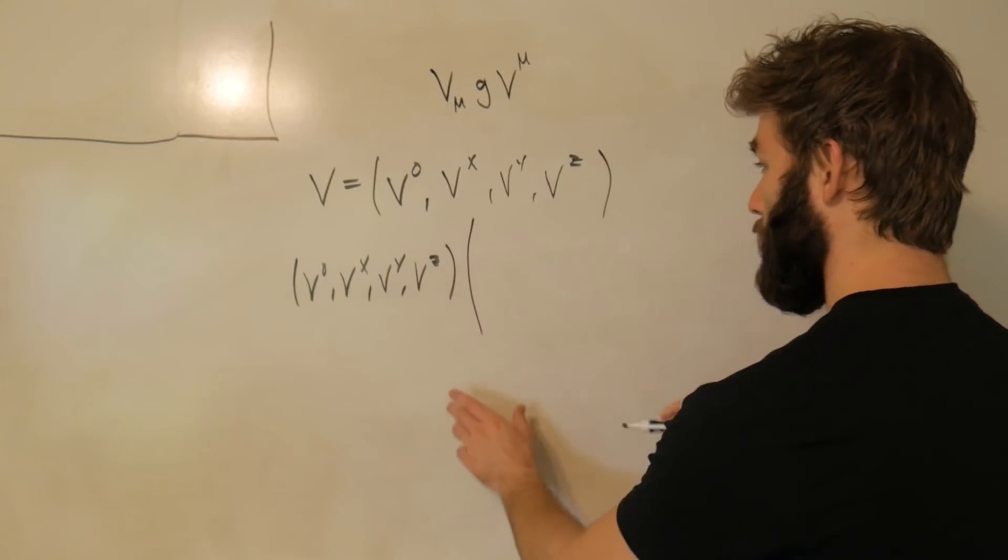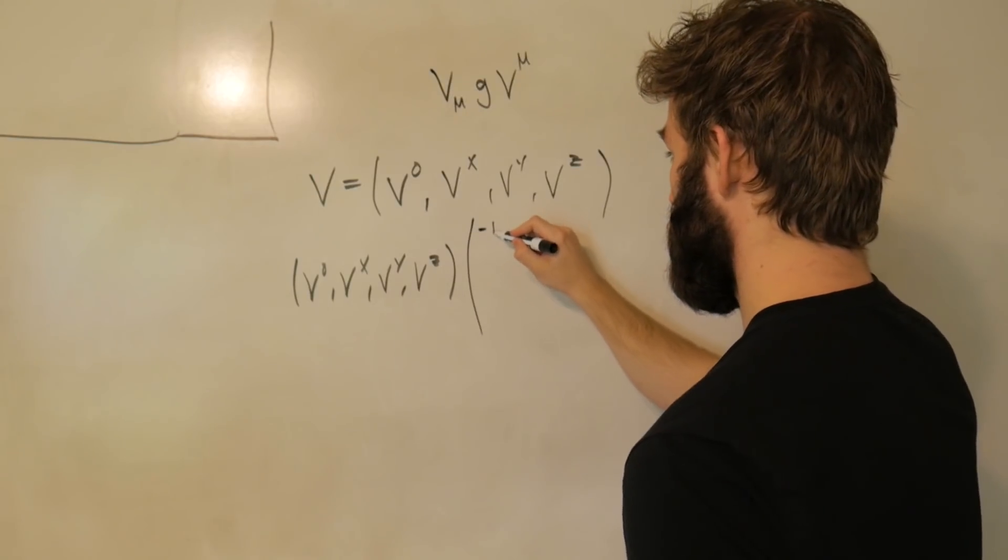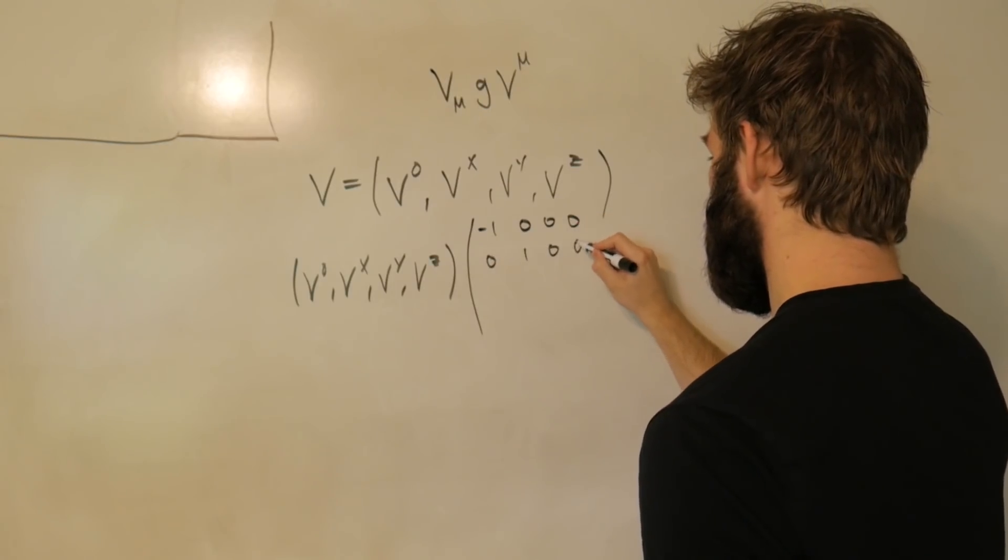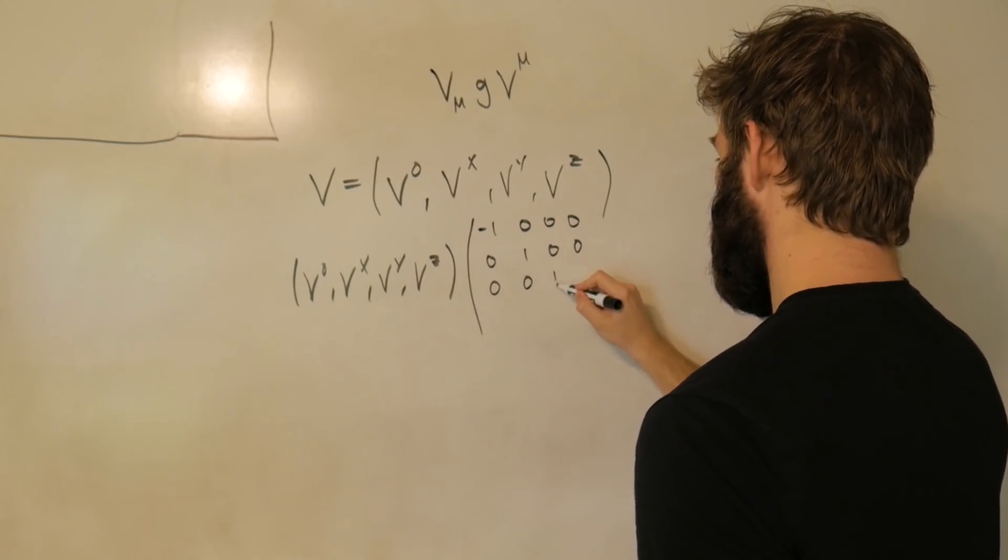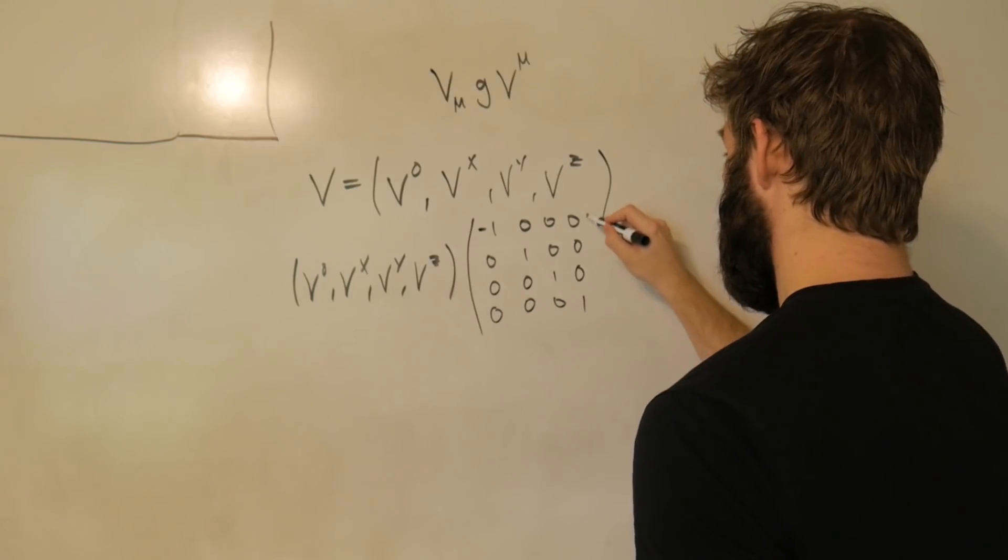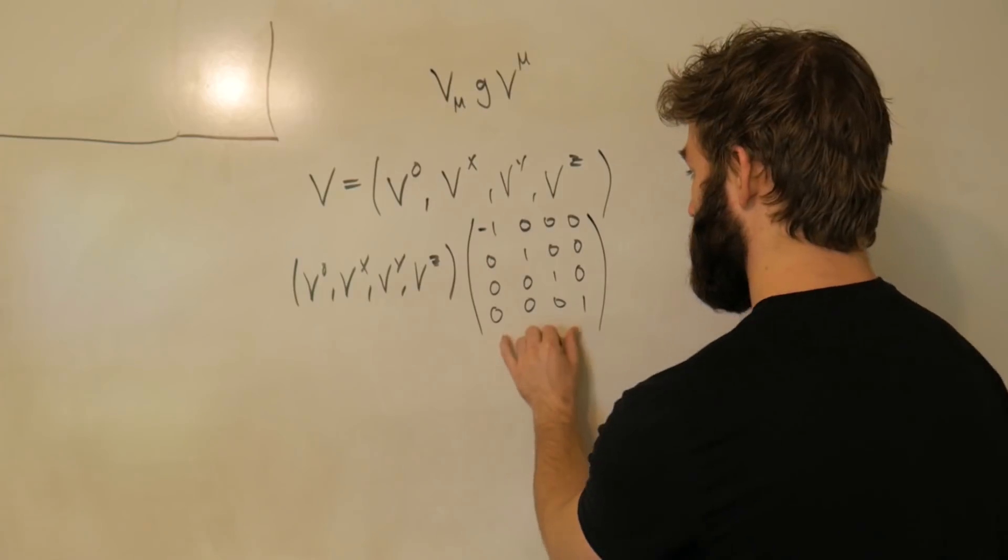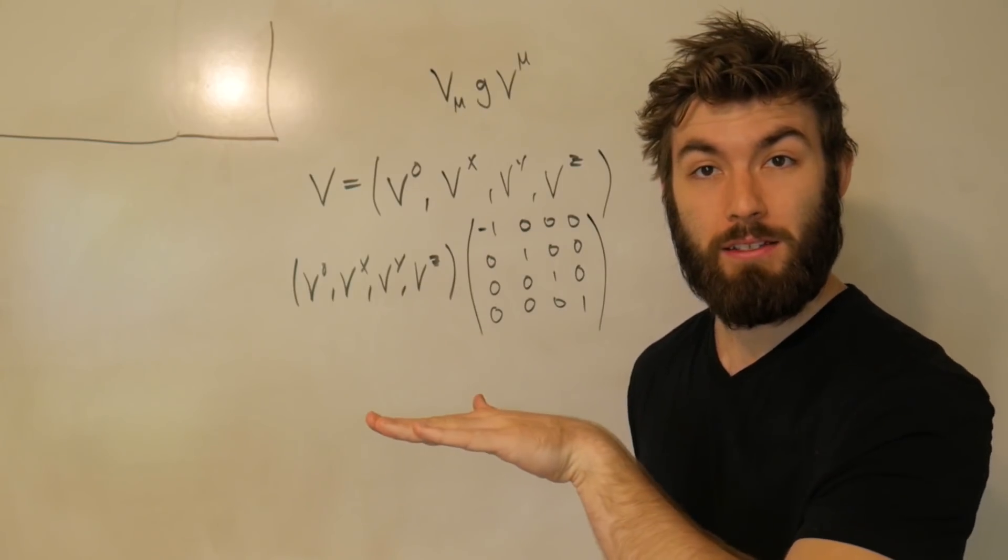And then sandwiched in between is going to be the metric, minus 1, 0, 0, 0, 0, 1, 0, 0, 0, 1, 0. For the record, this is what's called the Minkowski metric, and it is the metric associated with a flat spacetime.